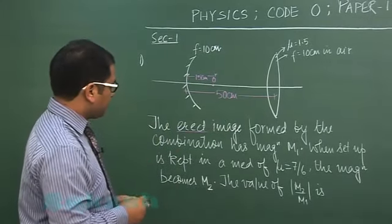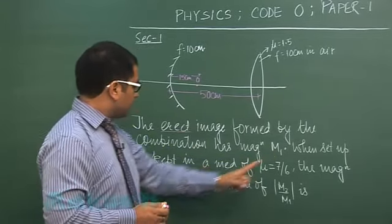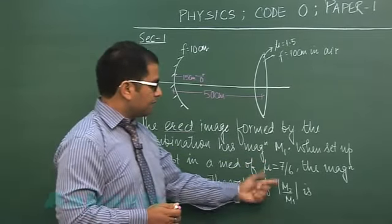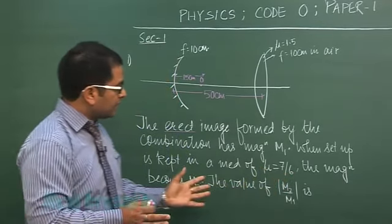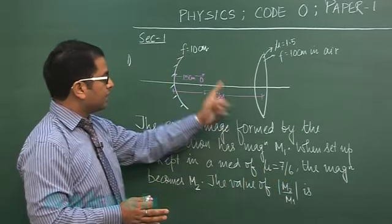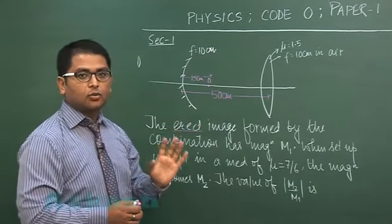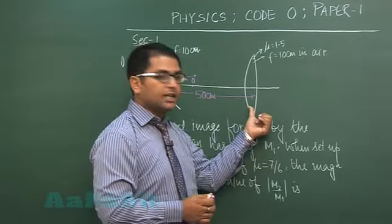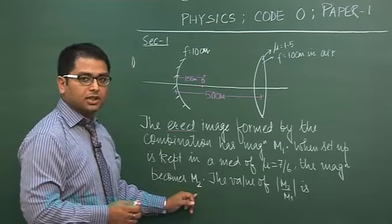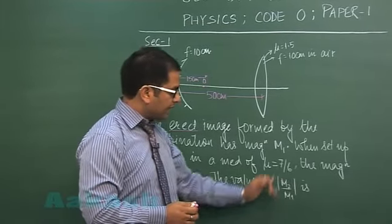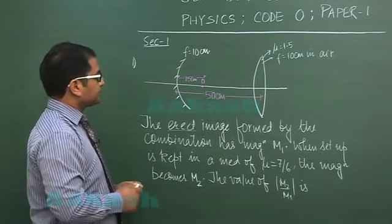That particular magnification is M1. When the whole setup is kept in a medium of refractive index 7/6, the magnification becomes M2. We need to calculate the magnitude of M2 by M1. Let's first deal with I1, the image due to reflection.